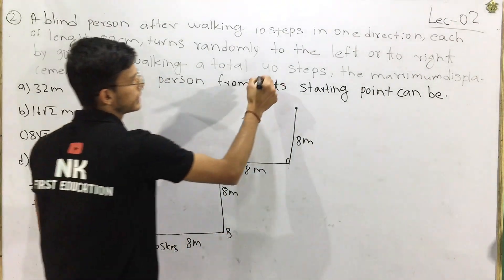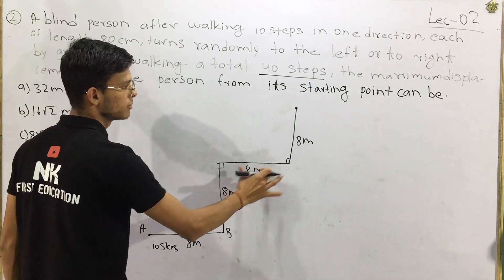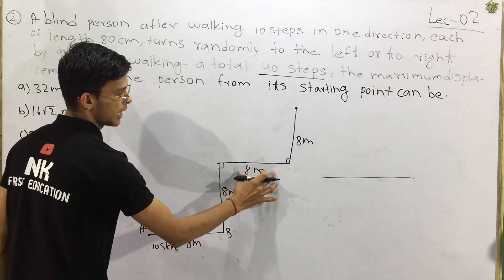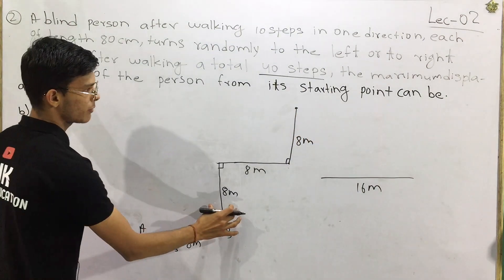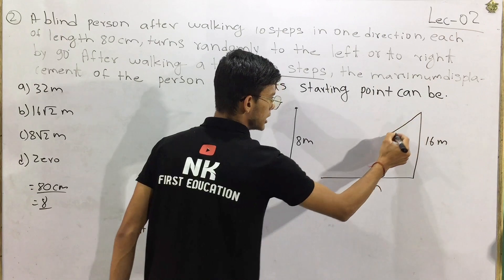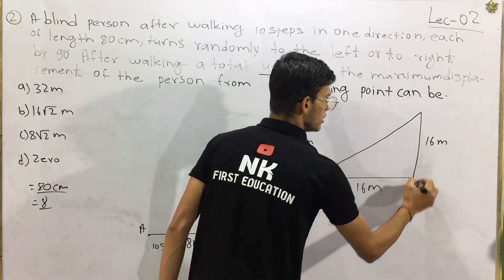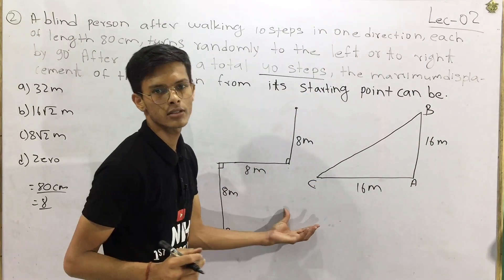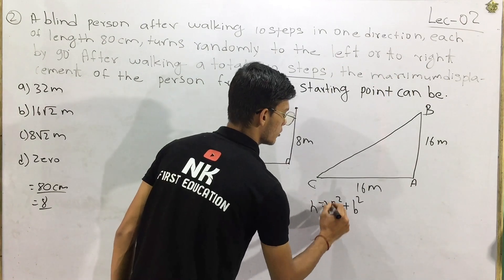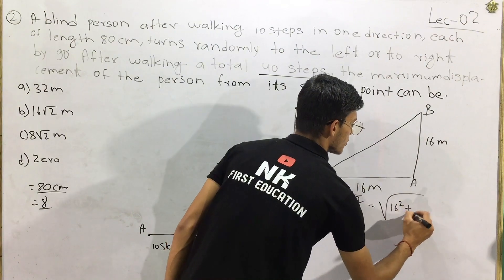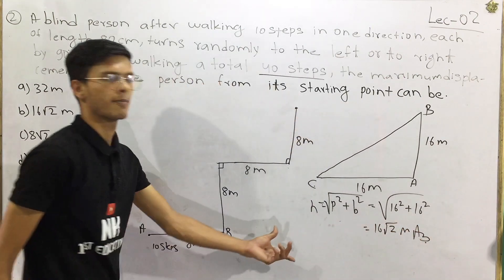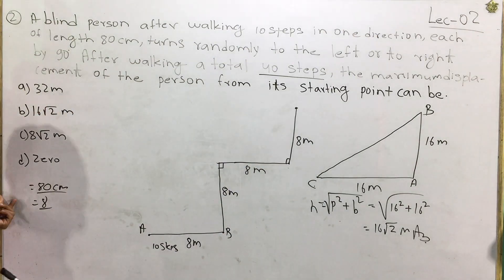The total is 40 steps. Going 8 meters in one direction, turning 90 degrees, going 8 meters in the perpendicular direction. So the two sides are 8 + 8 = 16 meters each along the x and y directions. Using Pythagoras: H squared equals P squared plus B squared, which is 16 squared plus 16 squared. The maximum displacement is 16√2 meters. This is the final answer.